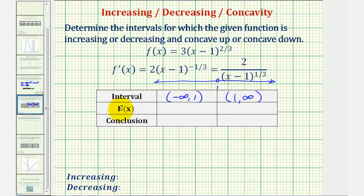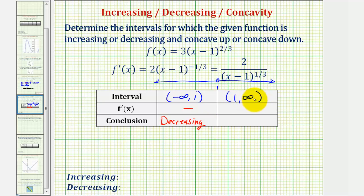Now we'll test the sign of the first derivative in each of these two intervals. For the left interval, using a test value of x equals zero, the first derivative would be two divided by negative one to the one-third power, which would be negative. Since the first derivative is negative over this interval, the function is decreasing. For the right interval, testing x equals two, the first derivative equals two divided by positive one to the one-third power, which is positive, so the function is increasing over this interval.